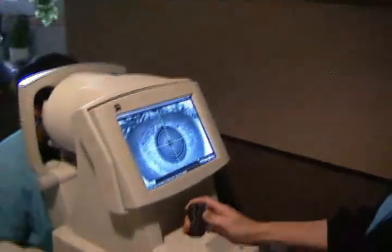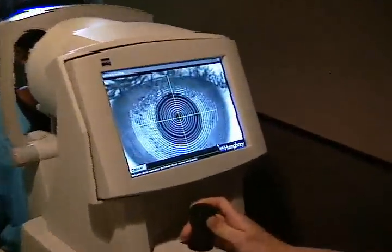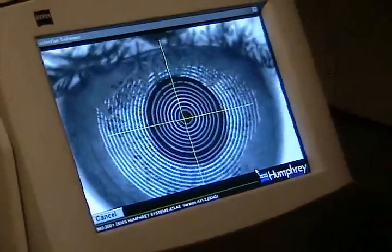Basically, a series of bright rings known as placido rings are projected onto the cornea. A camera takes a picture of the reflection.